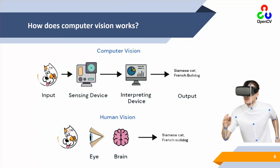This human vision system is translated into a computer vision system using the same concept. We have an input, a sensing device analogous to the human eye, and an interpreting device analogous to the brain, which generates output. Computer vision is essentially a replica of the human vision system — and the human vision system is considered one of the best vision systems in the universe.